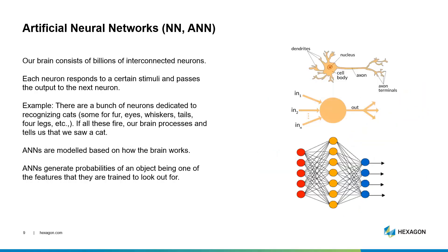Our brain has billions of interconnected neurons that all talk to one another. A bunch of our neurons are able to identify specific features based on the attributes of that feature. Take, for example, a cat — when we see a cat, we see fur, whiskers, eyes, tail, etc. All of these neurons fire and connect with one another, which then helps our brain to say, yes, this is a cat. Artificial neural networks are modeled on the same way — they're used to generate probabilities of an object being a certain thing based on the attributes or characteristics the network is trained to look for.